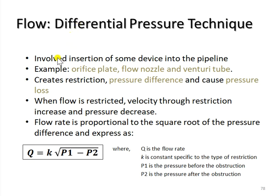This technique involves the insertion of some device into the pipeline, or some form of flow obstruction, that creates the pressure drop to the flow. The examples of these sensors are the orifice plate, nozzle, and venturi tube.